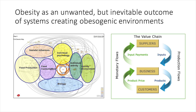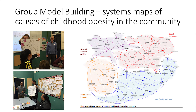In other words, by design the food system is creating obesogenic food environments. Community members can readily work through a guided process called group model building to create systems maps of the causes of childhood obesity in their community. This allows them to not only better understand the problem but also to identify the most effective leverage points for reorienting some of those systems — for example, school food systems — towards creating healthier outcomes for the students.